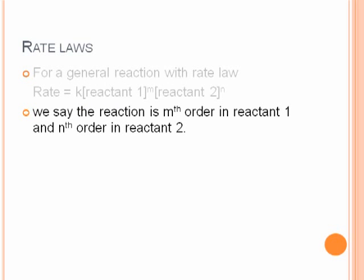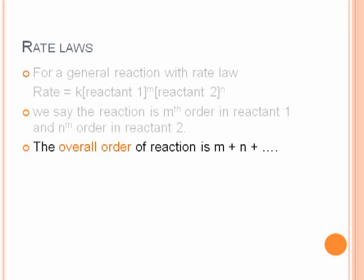We say the reaction is mth order with respect to reactant 1 and nth order with respect to reactant 2. The overall order would be the sum of the exponents, in this case m plus n.